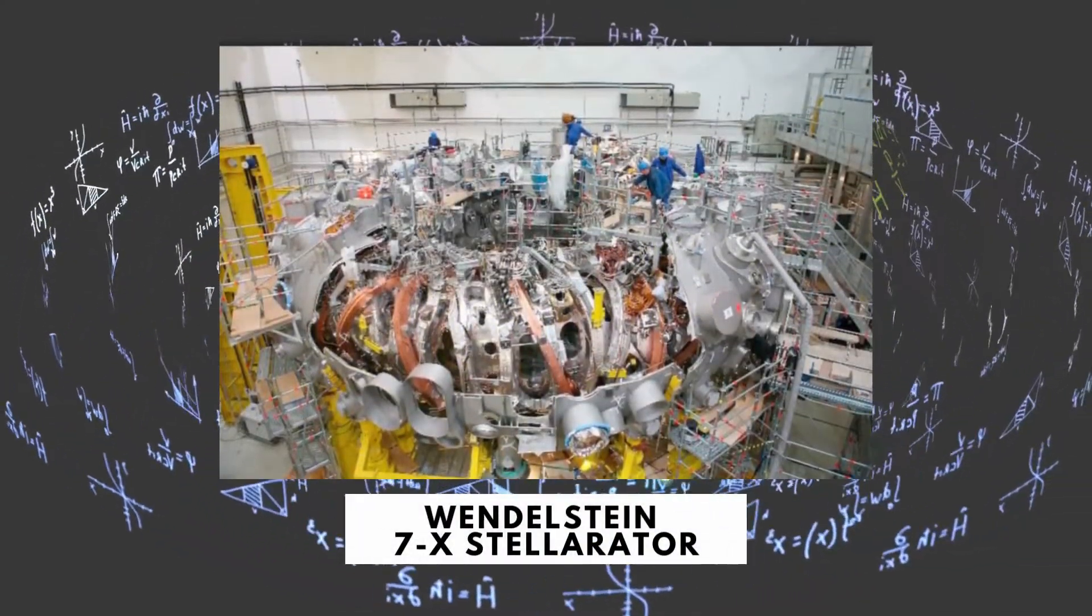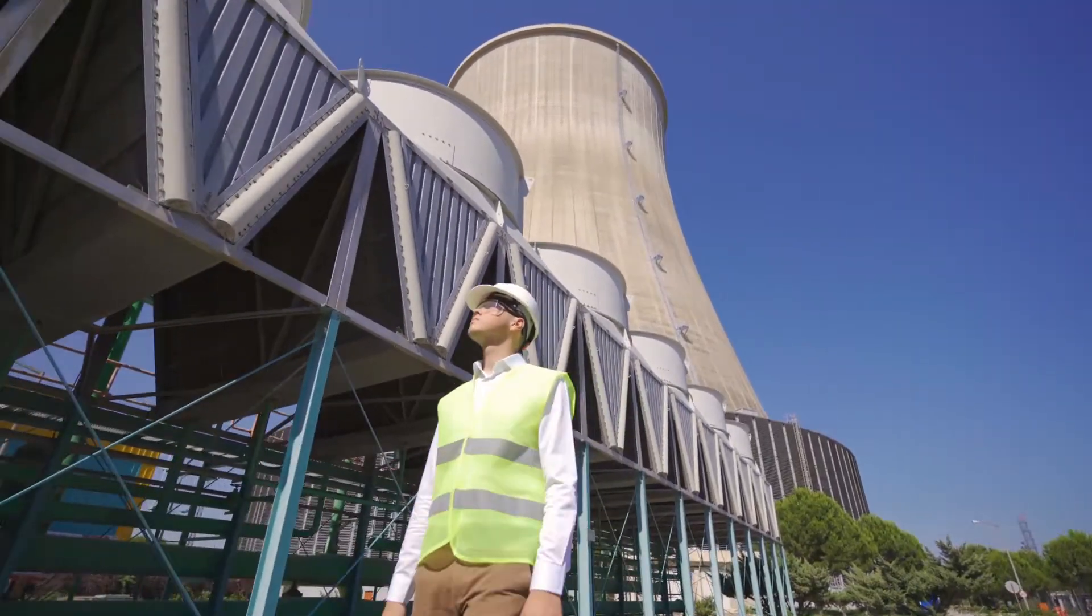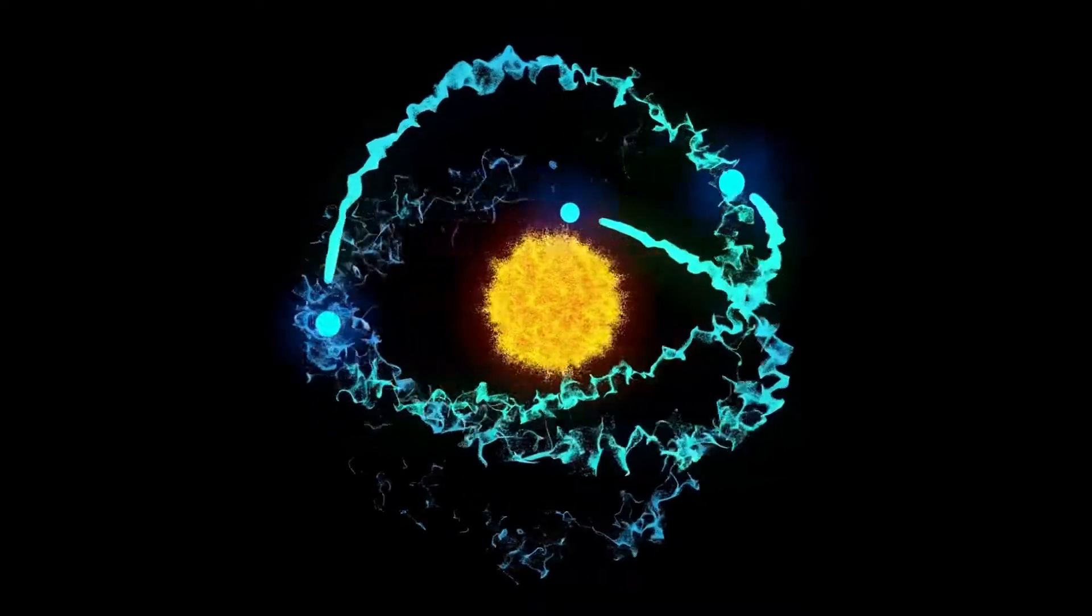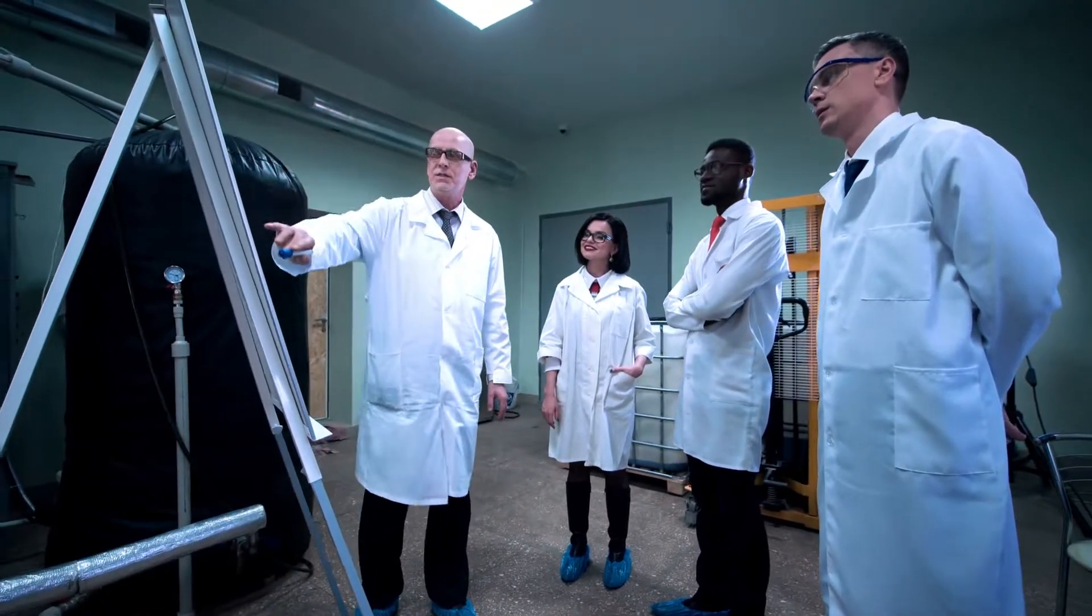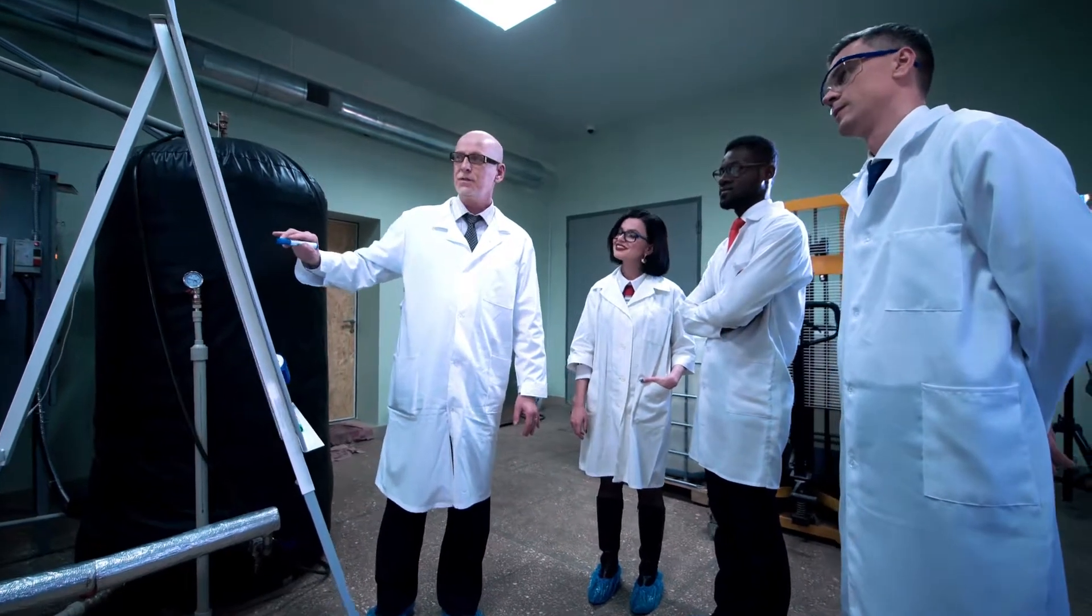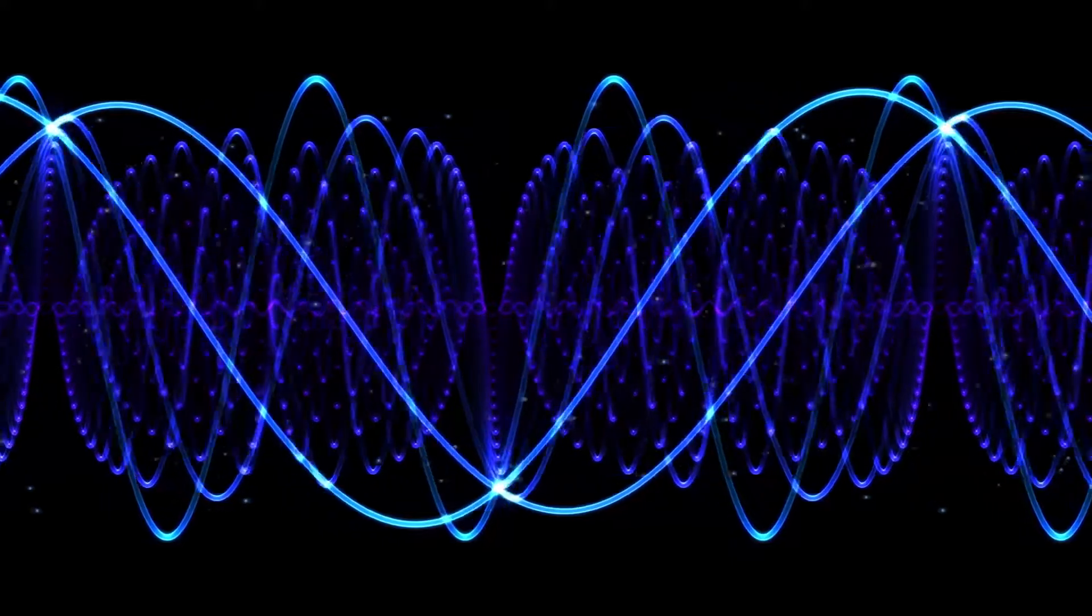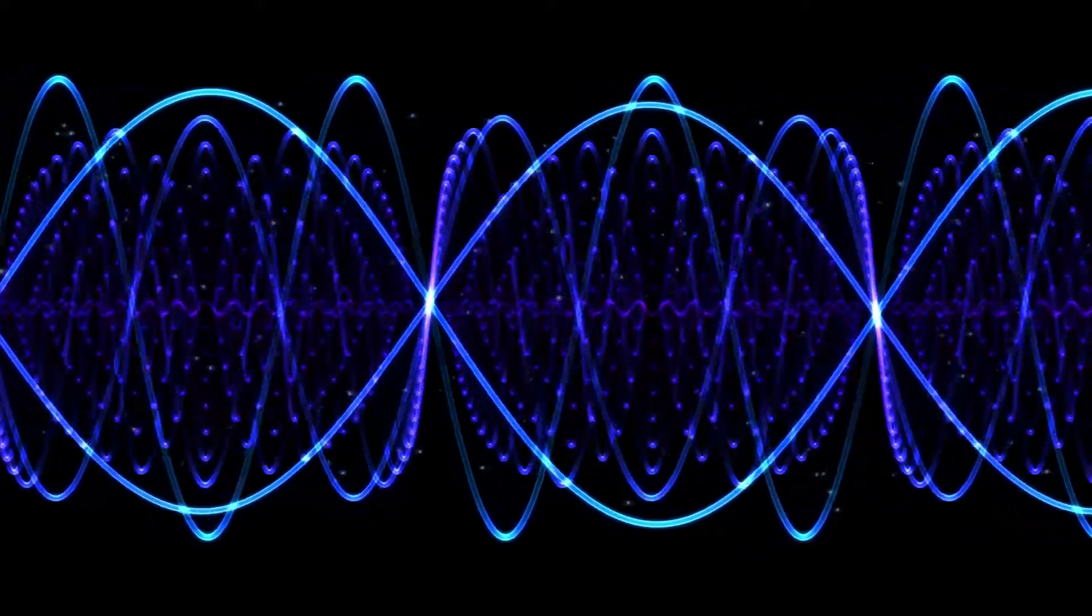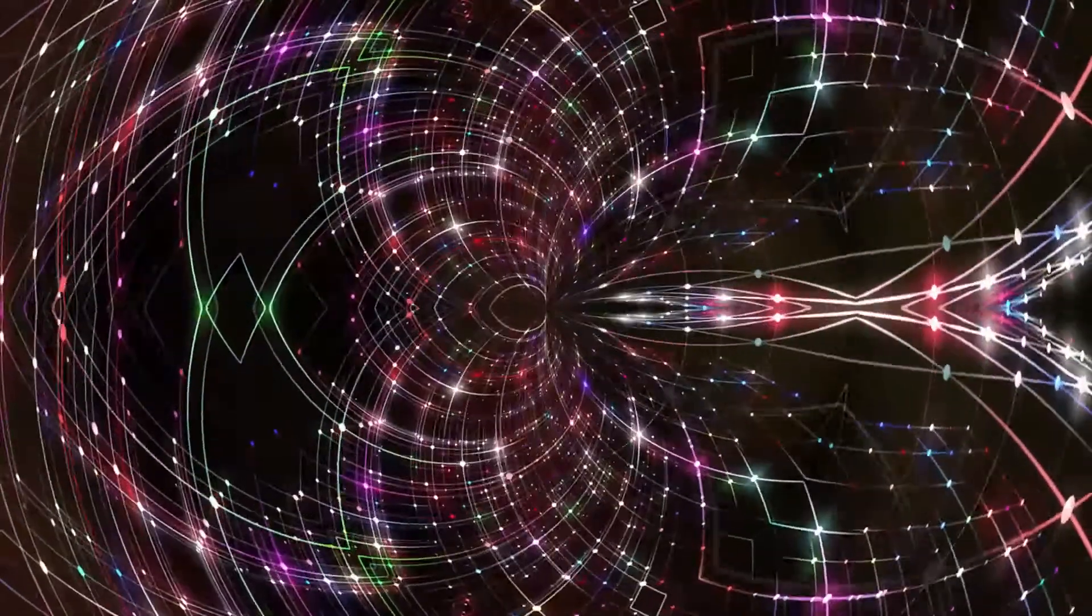The Wendelstein 7X Stellarator has been improved in order to demonstrate that it is possible to construct power plants that use fusion reactors of the Stellarator type. It took an enormous amount of theoretical and computational work to build the magnetic field which maintains the heated plasma confined and distant from the vessel's edges. This was done in order to address the shortcomings of earlier stellarators. One of the most important goals was to reduce the amount of energy that the plasma lost as a result of the ripple in the magnetic fields.